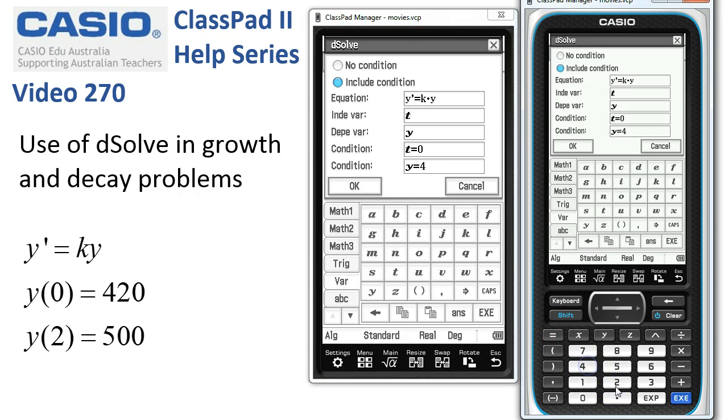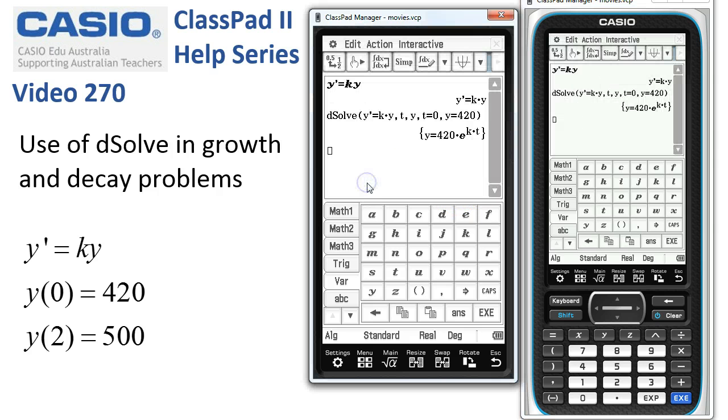Everything's set to go, we tap OK and ClassPad has come up with a suitable solution to that differential equation. Now to go and do some more work with it and figure out the exact value of k.